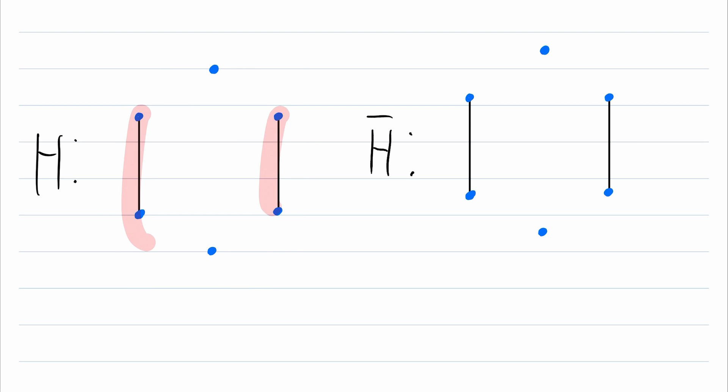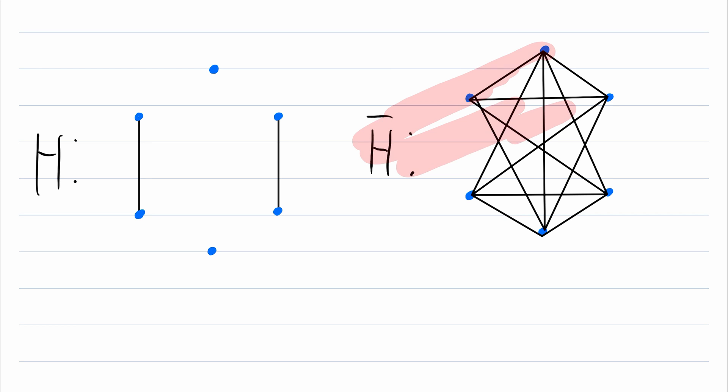We start off with the same vertex set. Then wherever there was an edge before, there cannot be an edge now. And then every pair of distinct vertices not adjacent in H need to be adjacent in H complement. So I'll go ahead and make all of these edges. So here we have H complement.